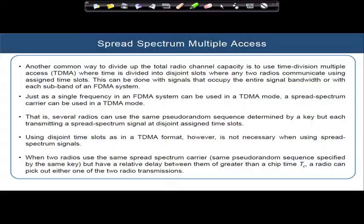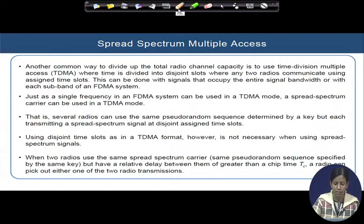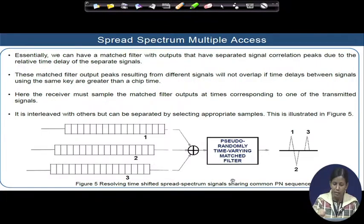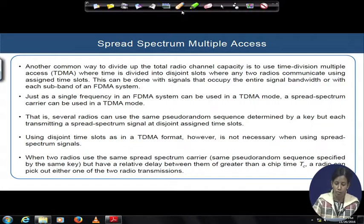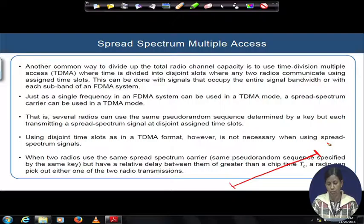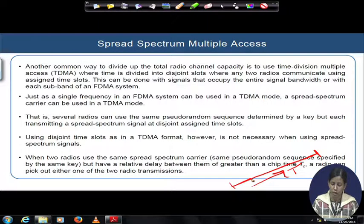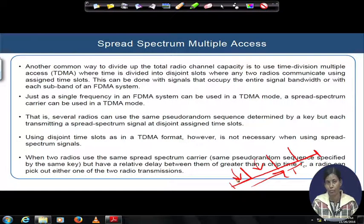Now let us discuss another kind of multiple access technique: time division multiple access, or TDMA. In TDMA, the total capacity — the whole available bandwidth of the channel — is allotted to all users. They can use the same frequency, but the time of their operation is not the same. Over the time axis, user 1 is allotted some time slot, then user 2 accesses the channel at the next time slot. Each user is given a time slot within which they have the flexibility to use the full bandwidth of the channel at the same frequency.